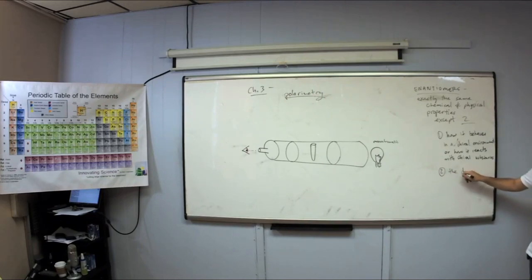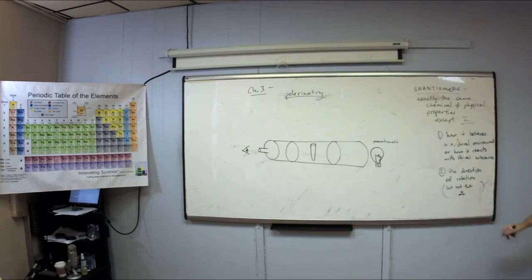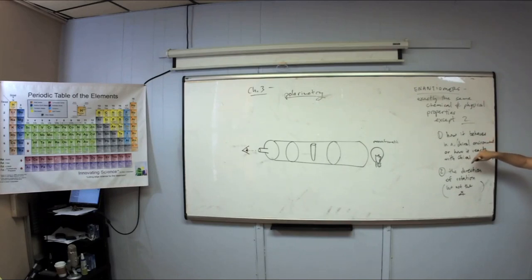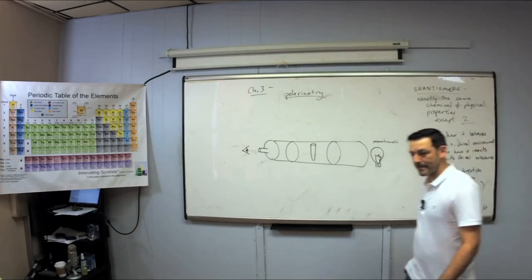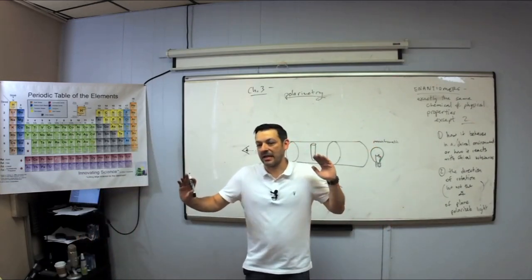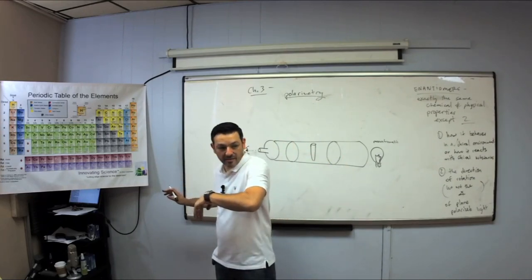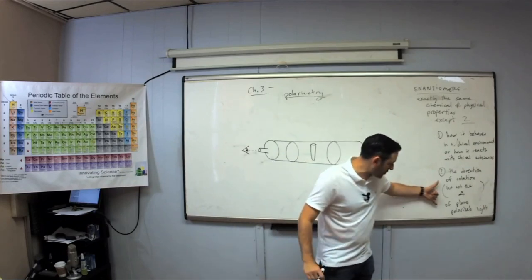The physical property is the direction of rotation — but not the angle of rotation. Enantiomers are different when it comes to the direction of rotation of plane-polarized light. They're different by direction, but not angle. Meaning, if I know one enantiomer rotates light 17 degrees to the right, then the other enantiomer rotates light the same angle — 17 degrees — but the other direction, to the left. It is the direction, not angle.